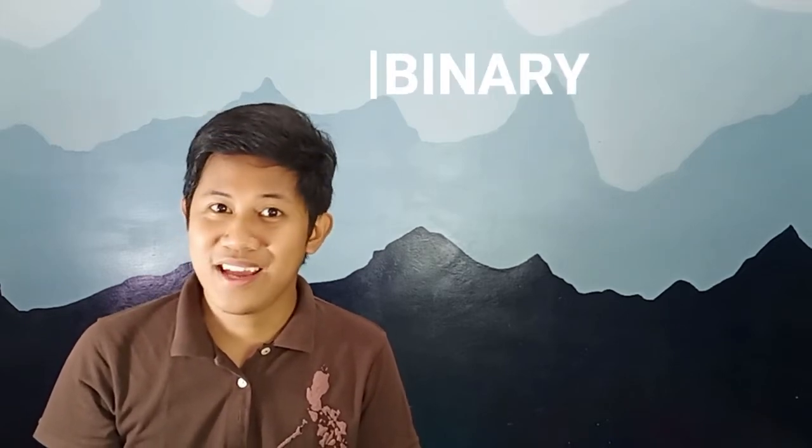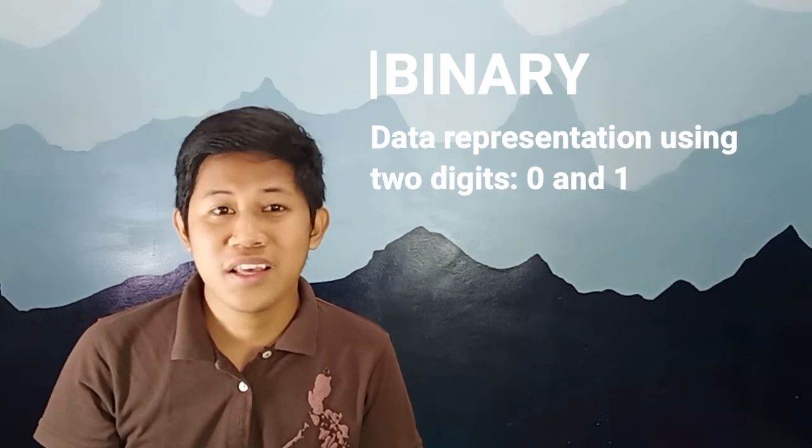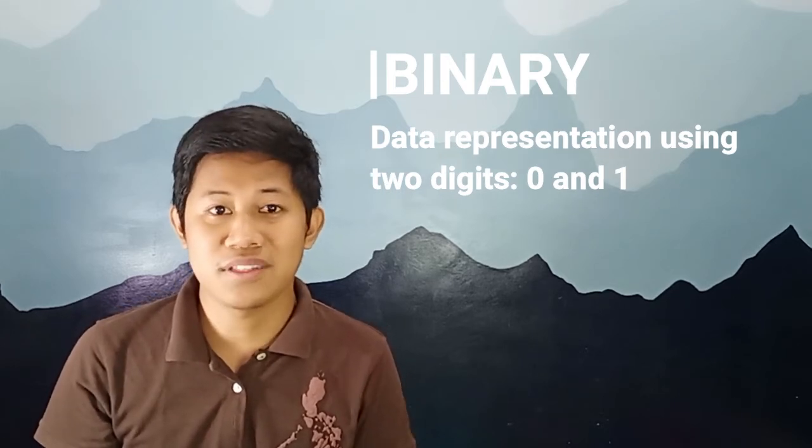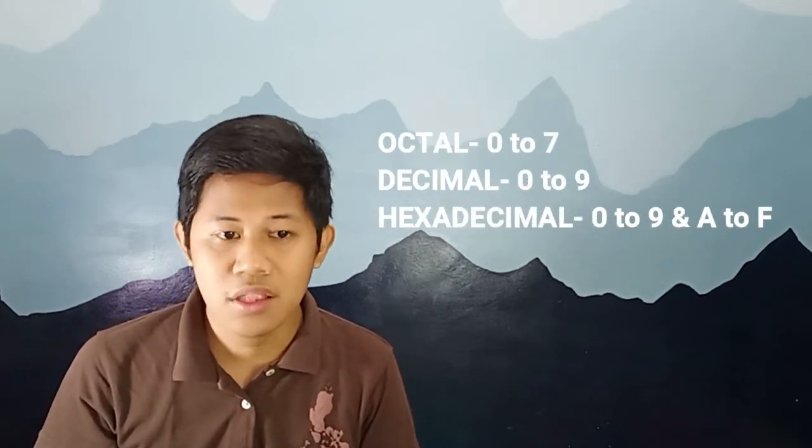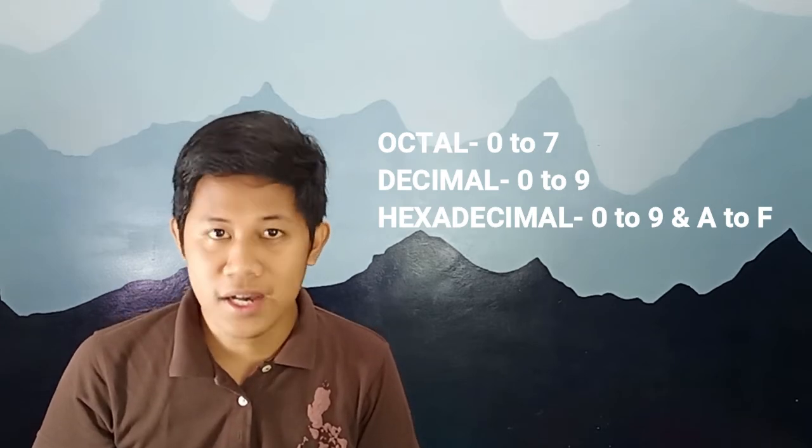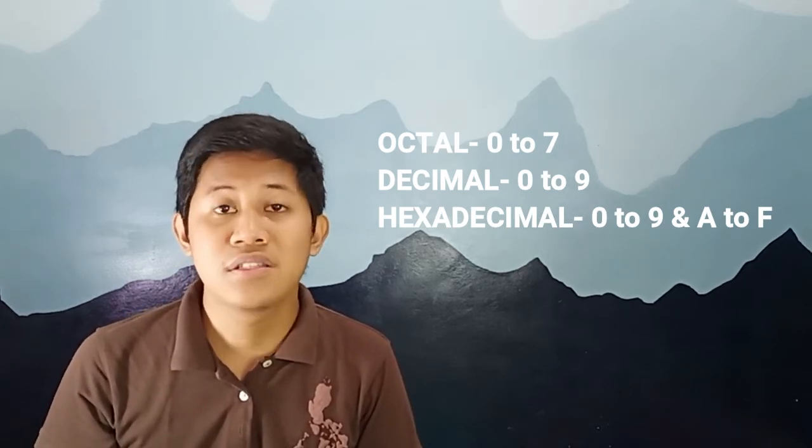In the computer world, our data is being represented by multiple numbers. But today, we will be discussing binary. What is binary? Binary is a data representation using only two digits — 0 and 1. There are also different systems such as octal, which uses 0 to 7; decimal, which uses 0 to 9; and hexadecimal, which uses 0 to 9 and A to F. But today, we will be focusing only on the binary system, representing data as 0 and 1.